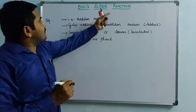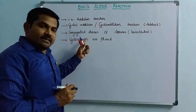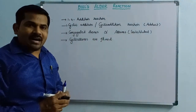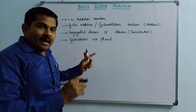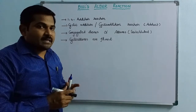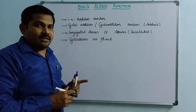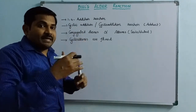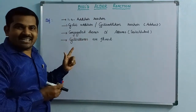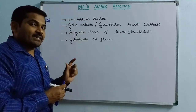It is a cycloaddition reaction in which conjugated dienes react with alkenes or substituted alkenes to form cycloalkenes. Addition generally takes place at the first carbon and the fourth carbon of conjugated dienes, hence these are called 1,4-addition reactions. The same reaction mechanism we have already seen in the name reaction called Michael addition reaction.